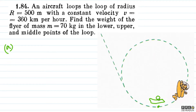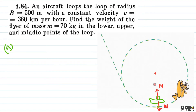Now, here is the flyer. Let's think about which forces are acting. First, there is a normal reaction in the upward direction, and then there is the force of gravity acting downward. These forces combine and the net result must be directed towards the center.